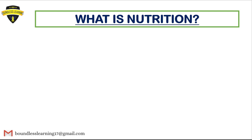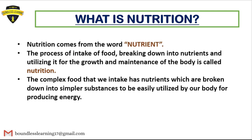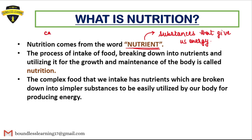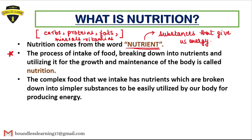The first question is: what exactly is nutrition? The word nutrition is derived from the word 'nutrient.' Nutrients are any substances that give us energy. The complex food we intake contains carbohydrates, proteins, and fats as the three major components, along with some amount of minerals and a very little amount of vitamins. All five of these components present in our food are nothing but nutrients.